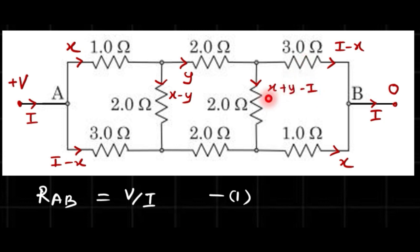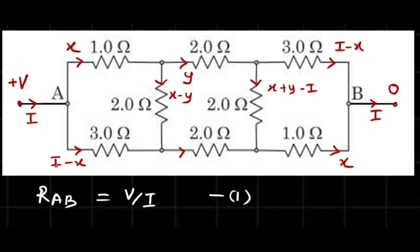Cross-checking: i minus x and x minus i cancel, leaving only y — that's correct. Adding the two currents at the other node, x terms cancel and the current there is i minus y.